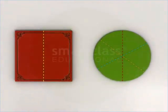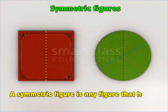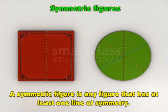This circle and the book earlier are examples of symmetric figures. A symmetric figure is any figure that has at least one line of symmetry.